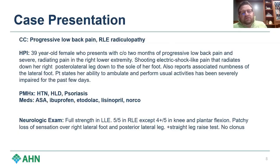The best way to start is with a case presentation. Chief complaint: progressive low back pain and right lower extremity radiculopathy. This is a 39-year-old female with two months of progressive low back pain and severe radiating pain into the right lower extremity.